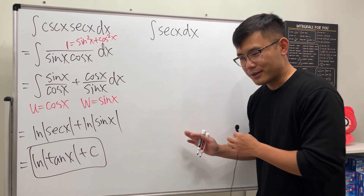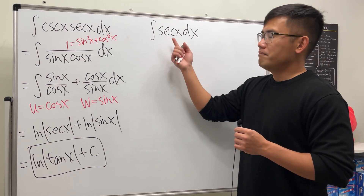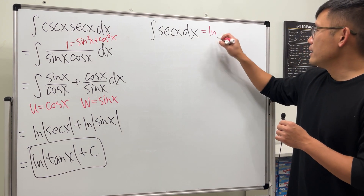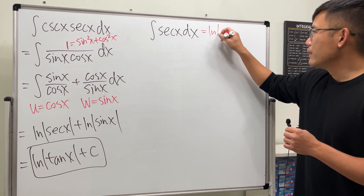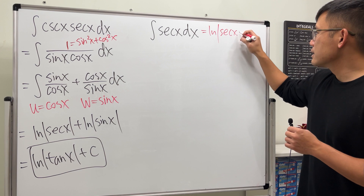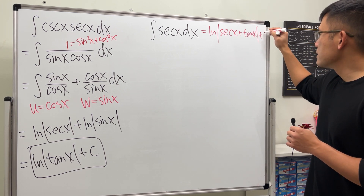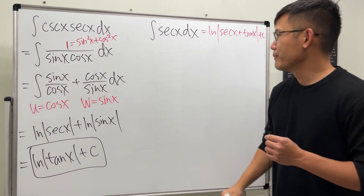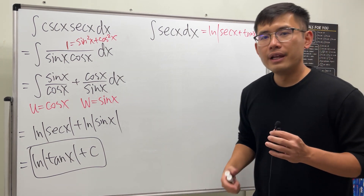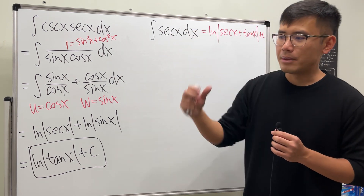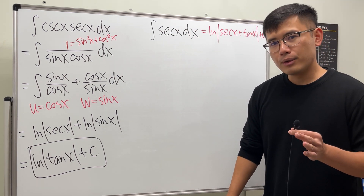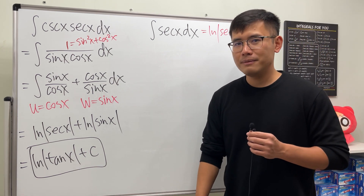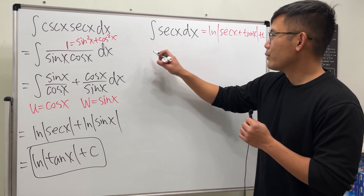Stay, don't go — we have one more for this video. The integral of secant x — this is a standard one. We know the answer is the natural log of absolute value of secant x plus tangent x, plus C. How do we know? It's on my board right here. But jokes aside, how do we integrate this? The standard way is to multiply the top and bottom by some stuff, but today I'm going to show you how to integrate this by multiplying by different stuff.